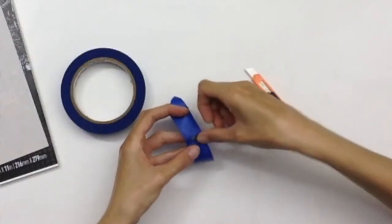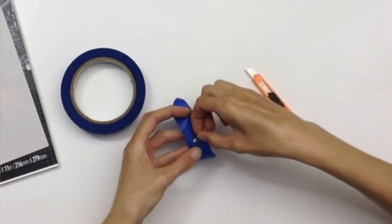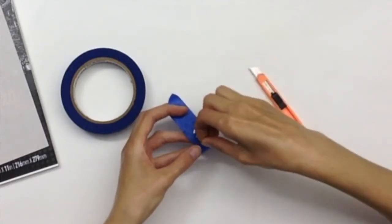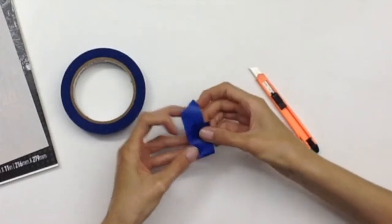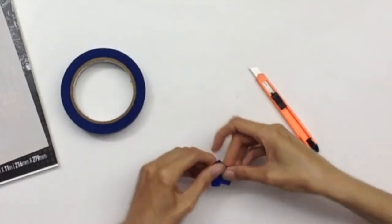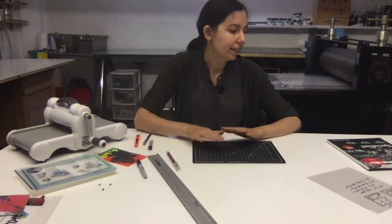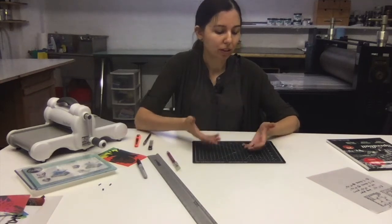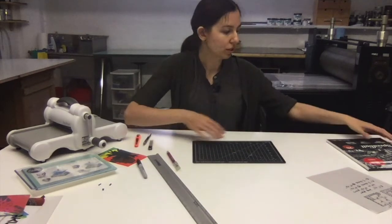Now it's important when you have sharps to dispose of these properly, so either keeping a sharps disposal container or to wrap it in masking tape before throwing it into the bin. Whenever you're handling clean printing paper, you also want to make sure your hands are clean and your work surface is clean.